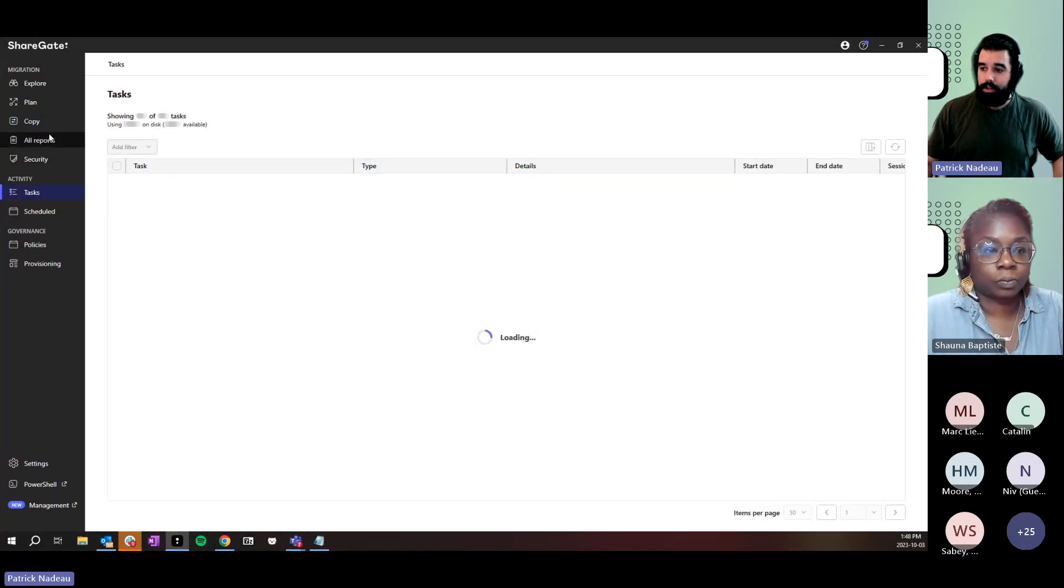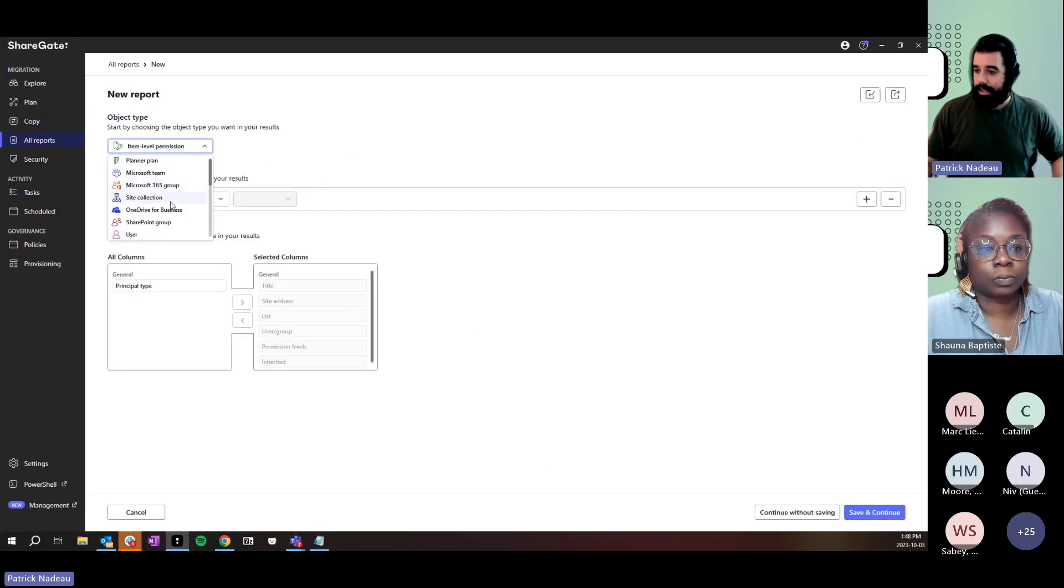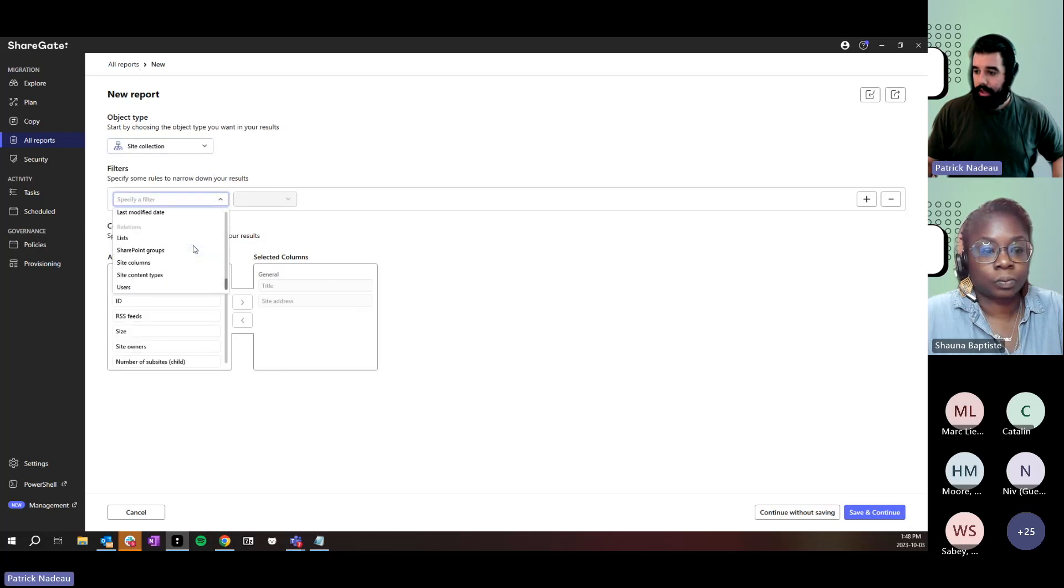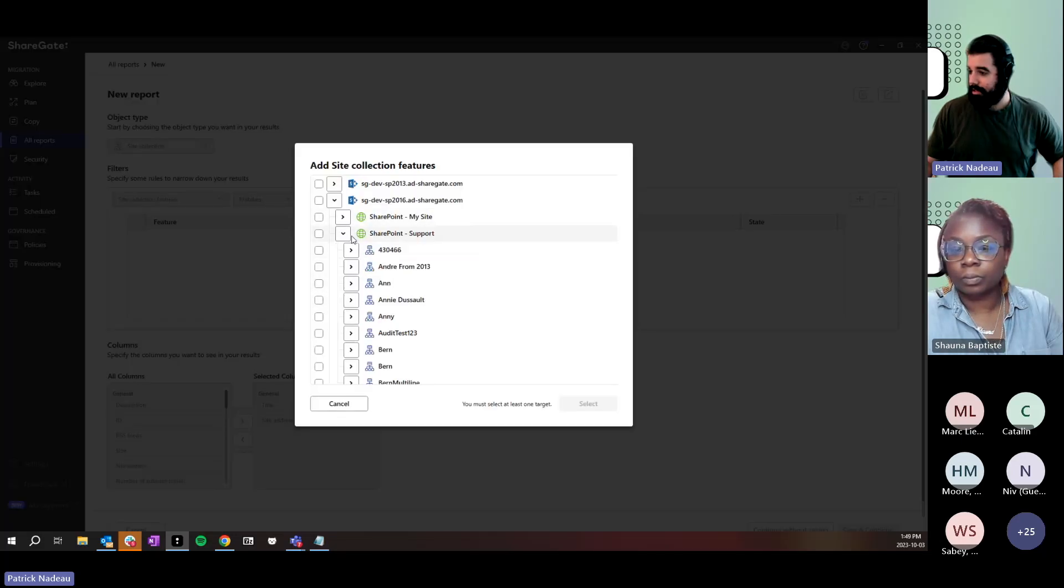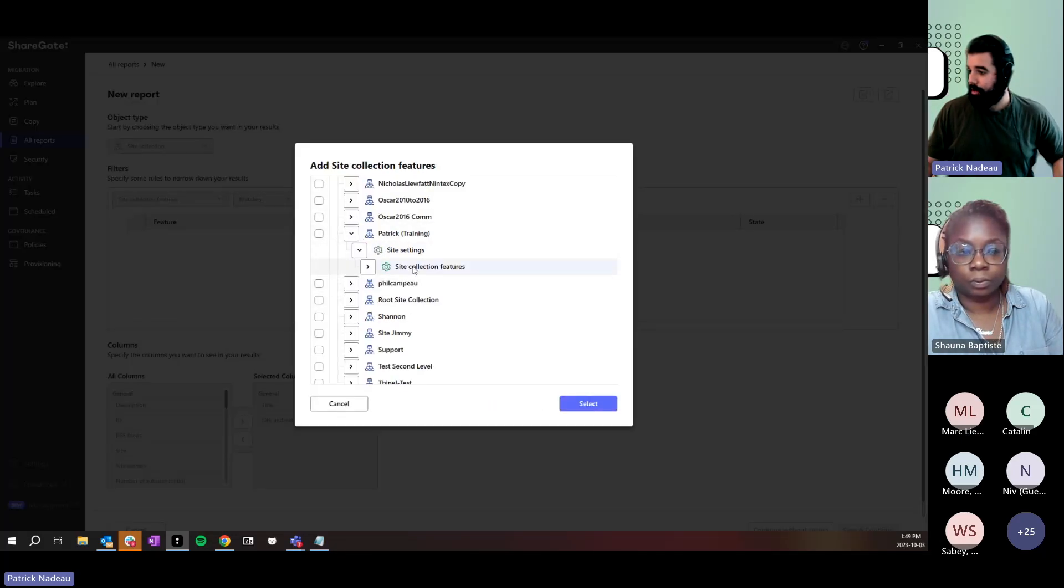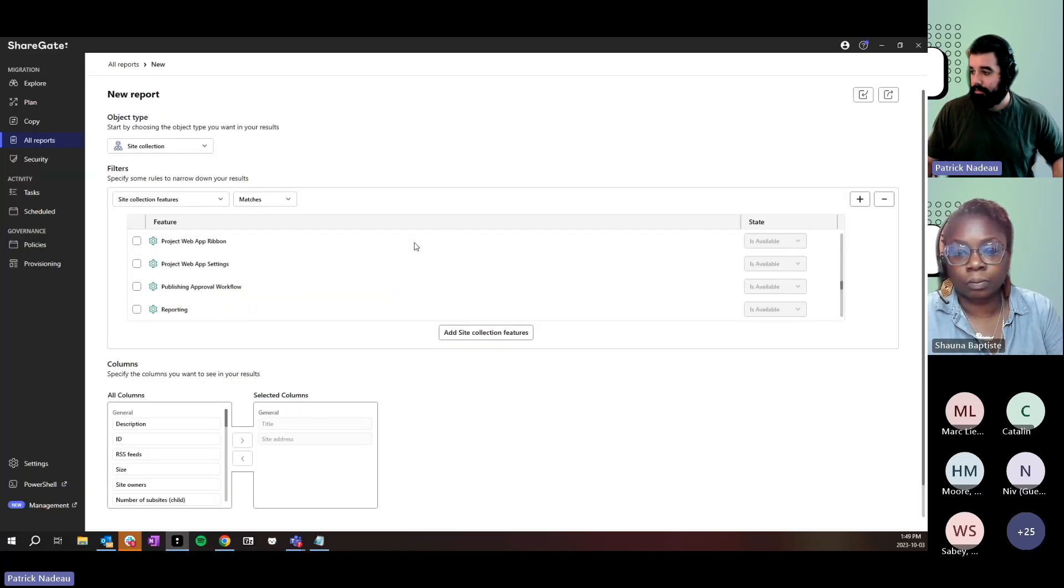You can go to all reports. We're going to go to a site collection object type. And then as a filter, we're going to scroll down here and go to site collection features. I'm going to navigate through all my sites here, go to site settings, and click the site collection features. And then I have my options here.